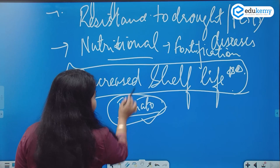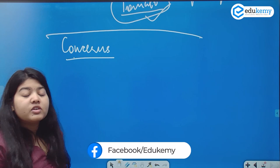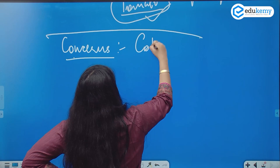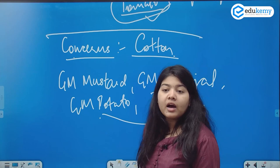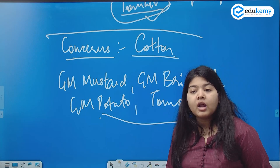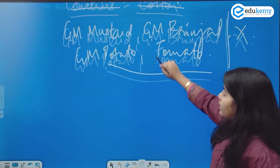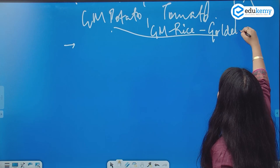What are the concerns? Which is the only GM crop allowed in India? GM mustard, GM potato, GM tomato — do you have any of these allowed legally in India? No. Why are they not allowed? GM rice, also called golden rice — what was its speciality? Vitamin A.